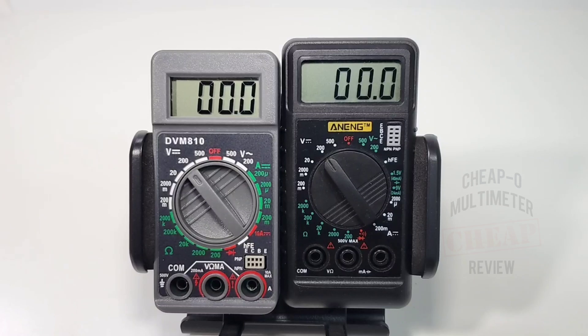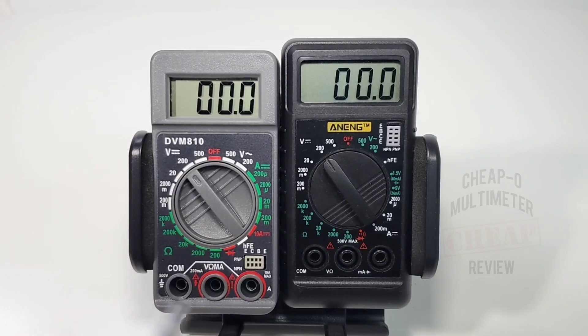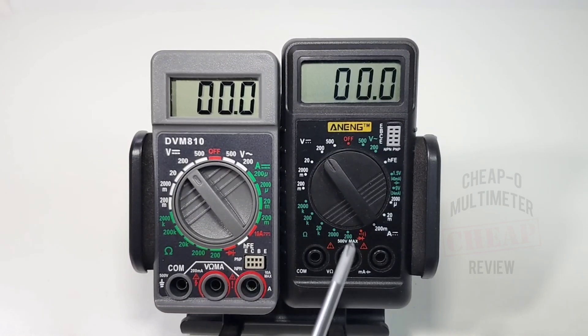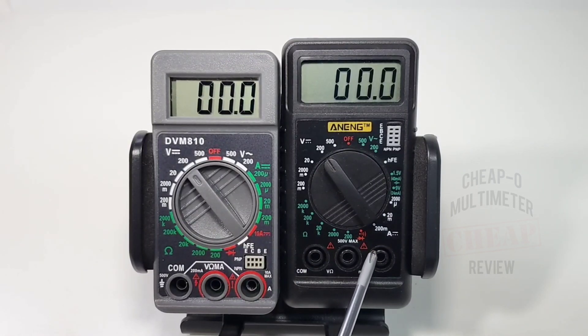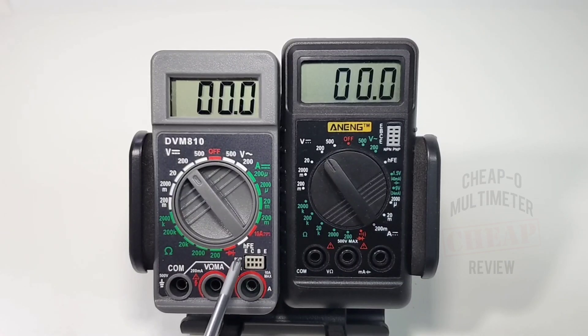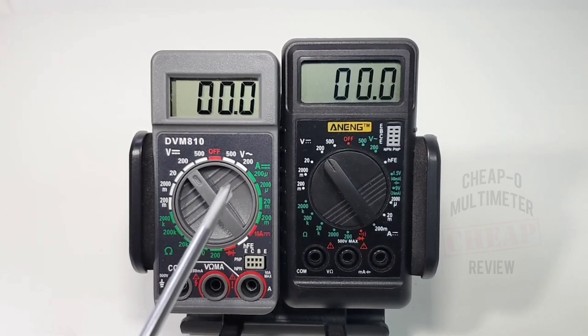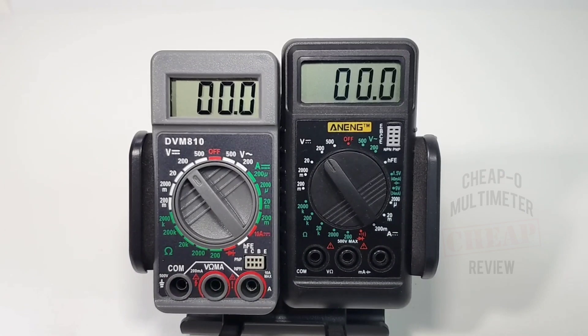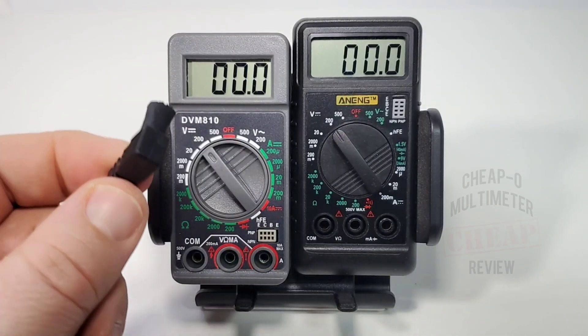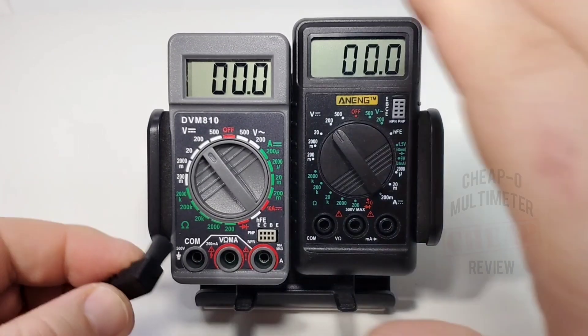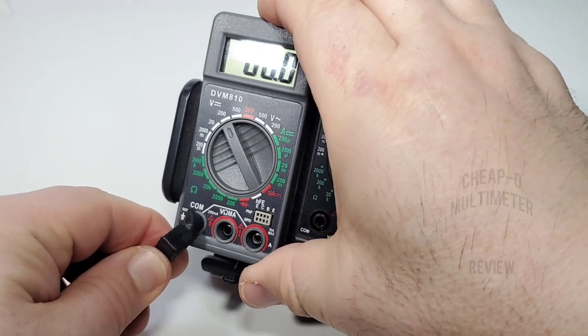One feature that is really sorely missing is the fact that there is no continuity. Even the small Anning still does have continuity along with the diode, but no continuity on the DVM-810. I love my continuity. The first thing you want to do if you get this meter is throw out these leads - they're absolute garbage. What is this, really?